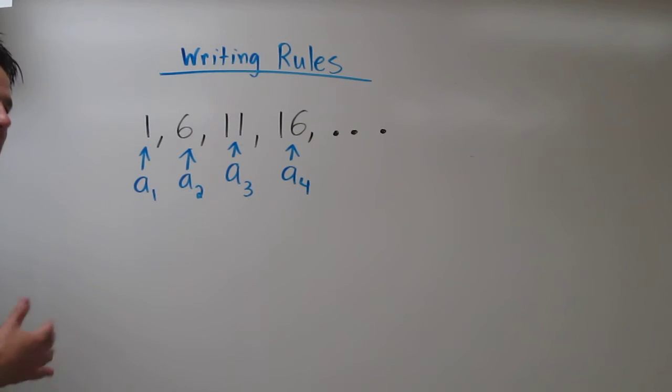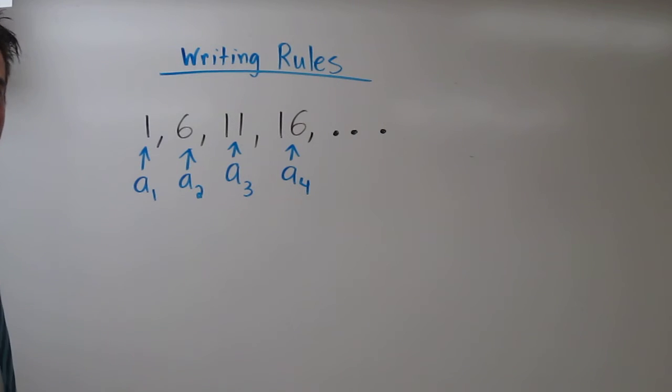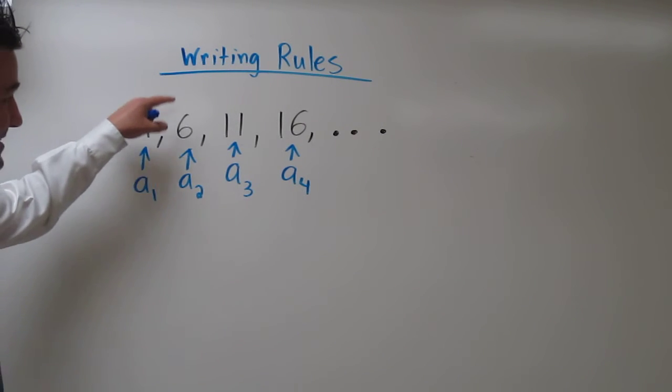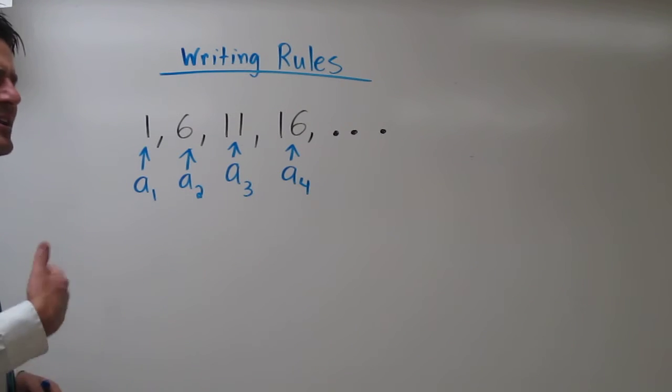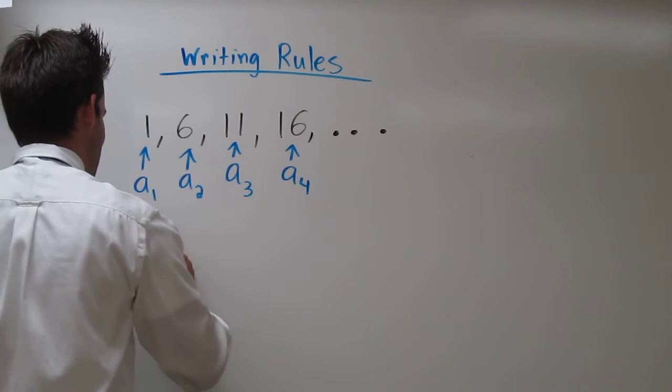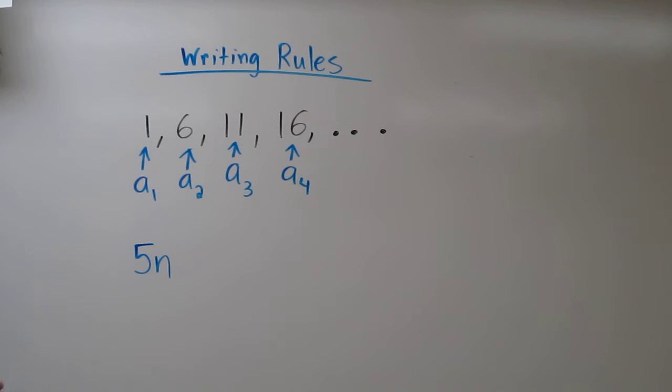What we're trying to do is figure out what function will turn 1, 2, 3, 4 into 1, 6, 11, 16. Now, we already know that they increase by 5 each time. So maybe a good place to start is just look at what 5n would do.